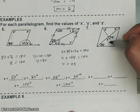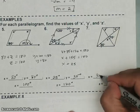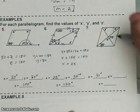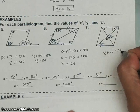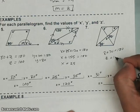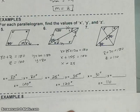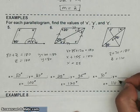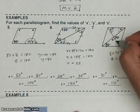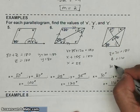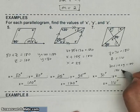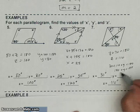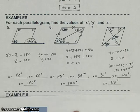Moving on to number 7, using the same idea with alternate interior angles, X equals 30 degrees. I have a linear pair here, so Z plus 70 equals 180, which tells me Z equals 110 degrees. Because I have alternate interior angles on this diagonal, I know 30 plus 110 plus Y equals 180, giving 140 plus Y equals 180. Subtracting 140 tells me Y equals 40 degrees.